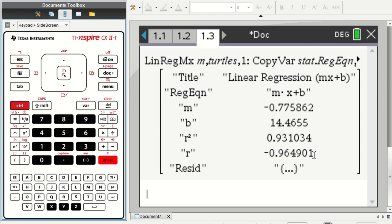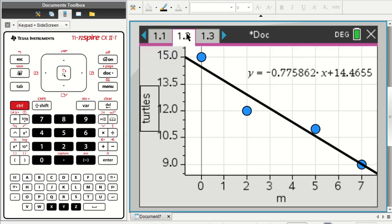And so that helps us judge and describe what the graph looks like. So going back to the graph, we could say there's a strong negative correlation between time and the number of turtles on the log.